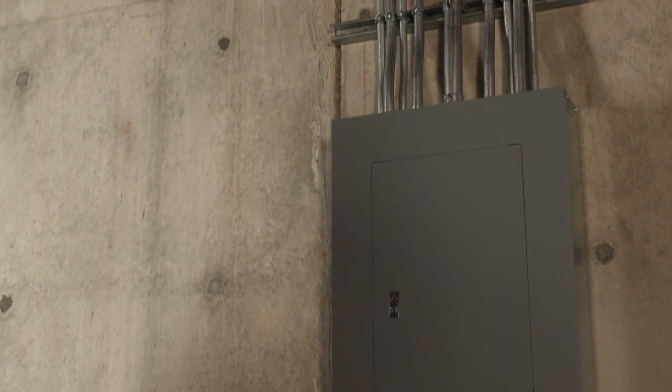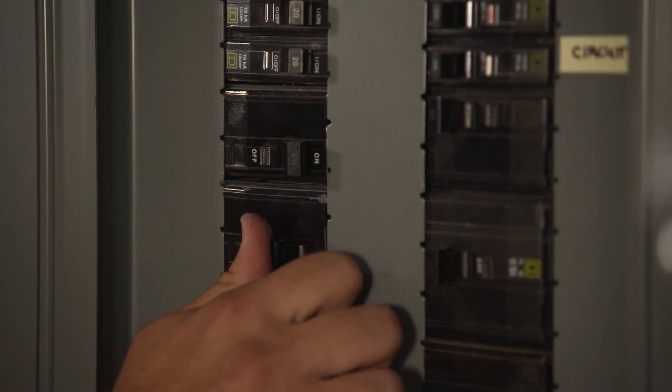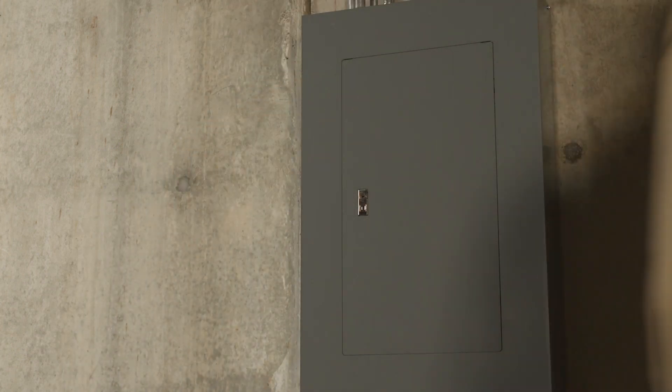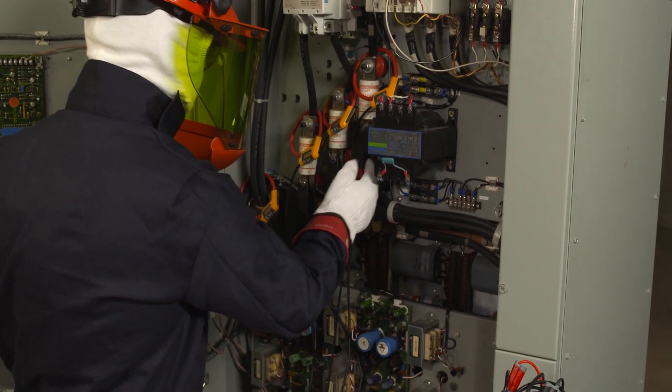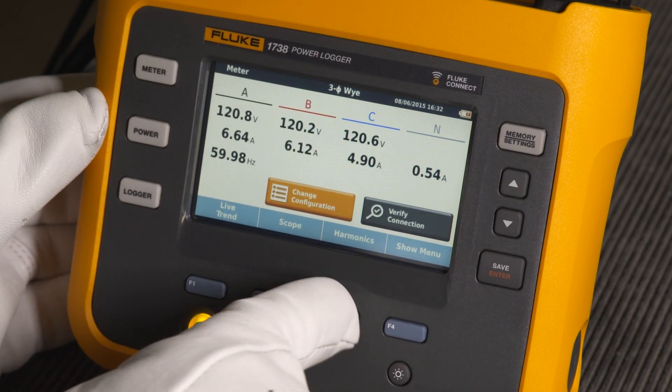Equipment failure is often due to a faulty or inconsistent power supply system, and as more modern facilities install automated systems, the likelihood of electrical disruption grows. The Fluke 1736 and 1738 power loggers can find these problems quickly and effectively.